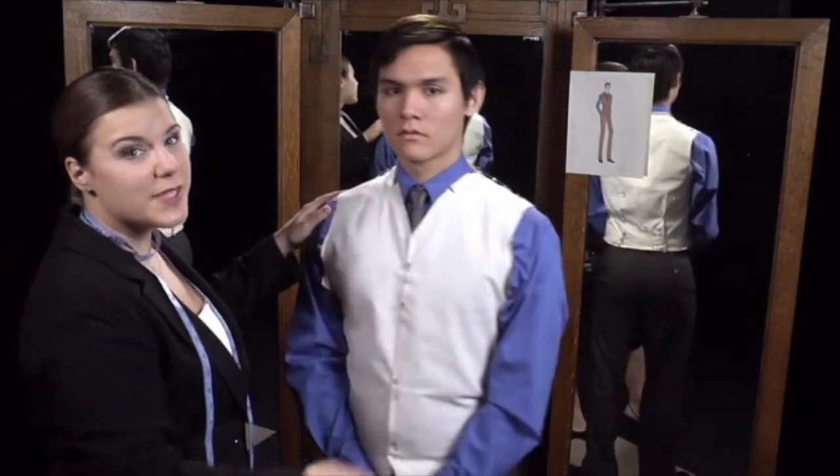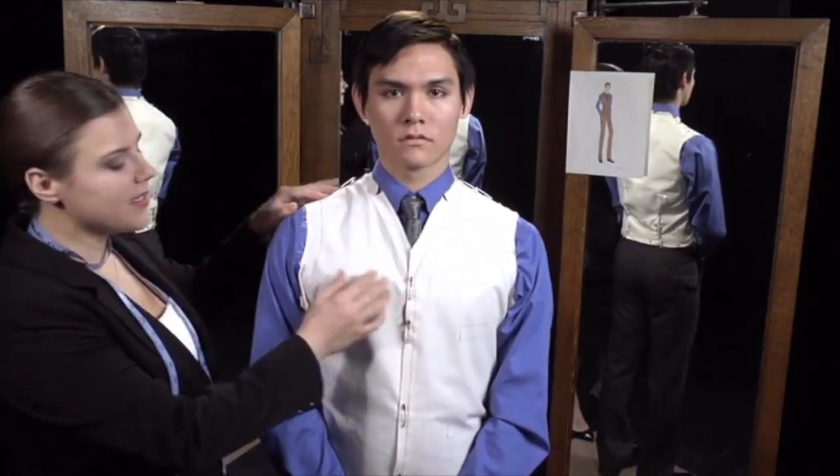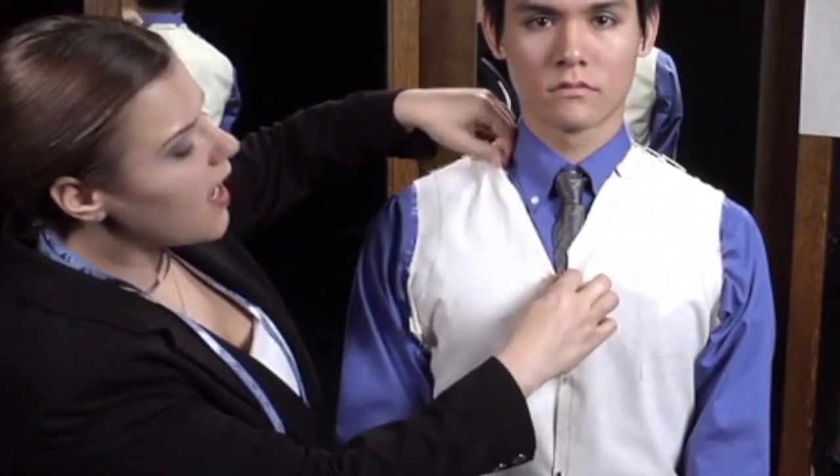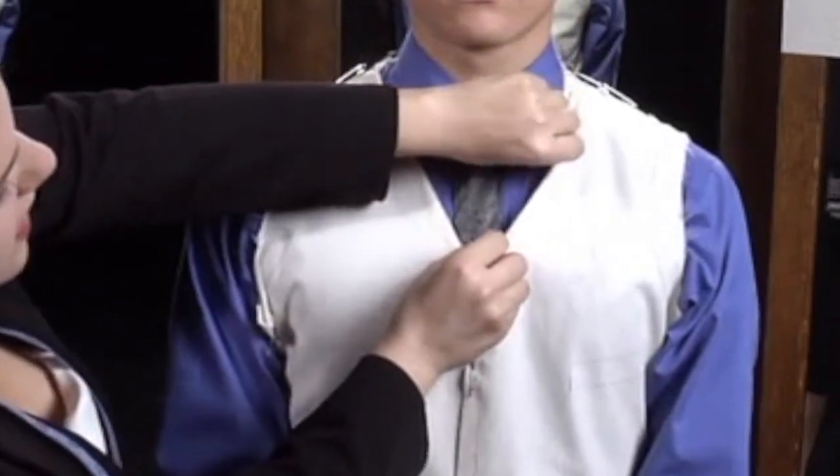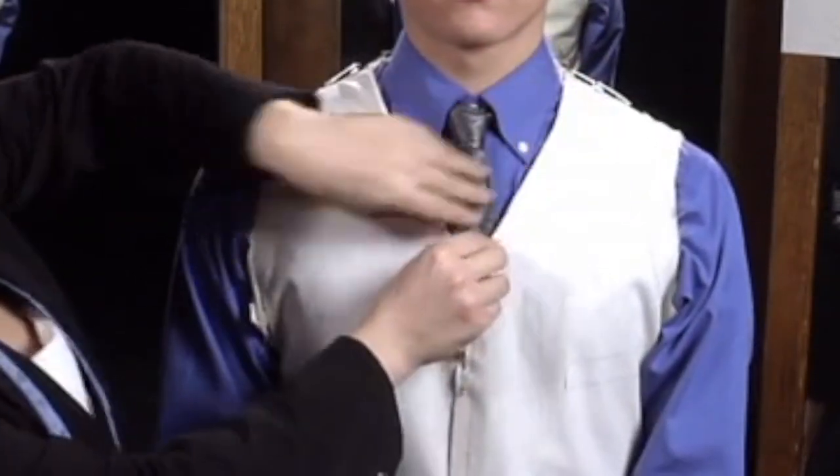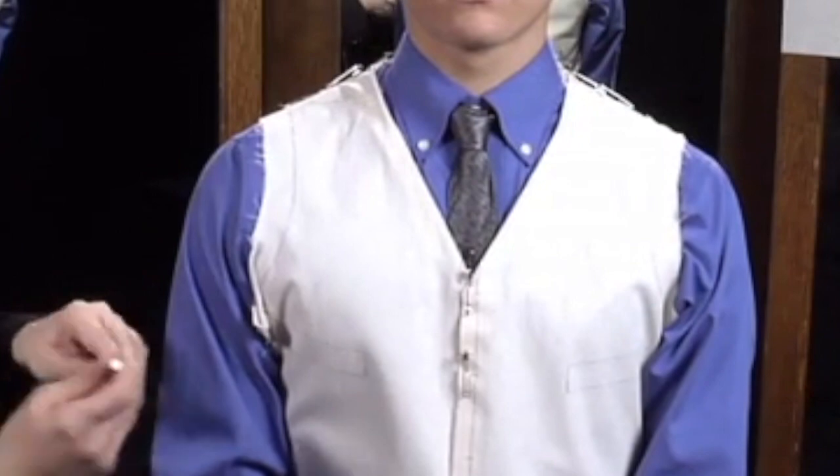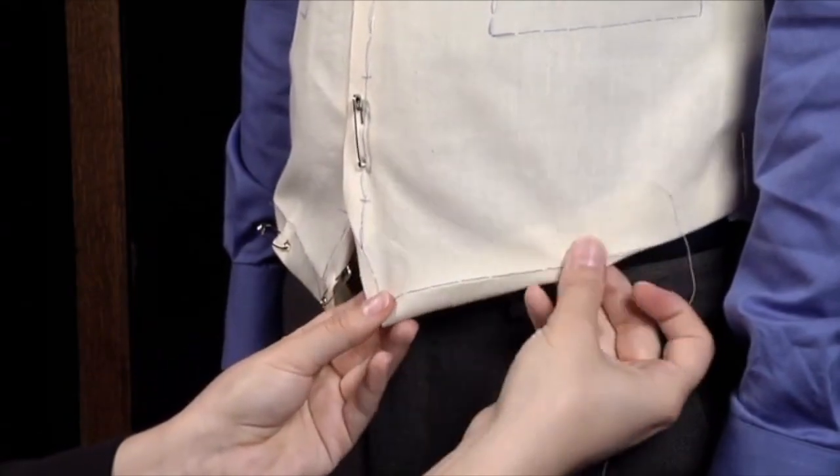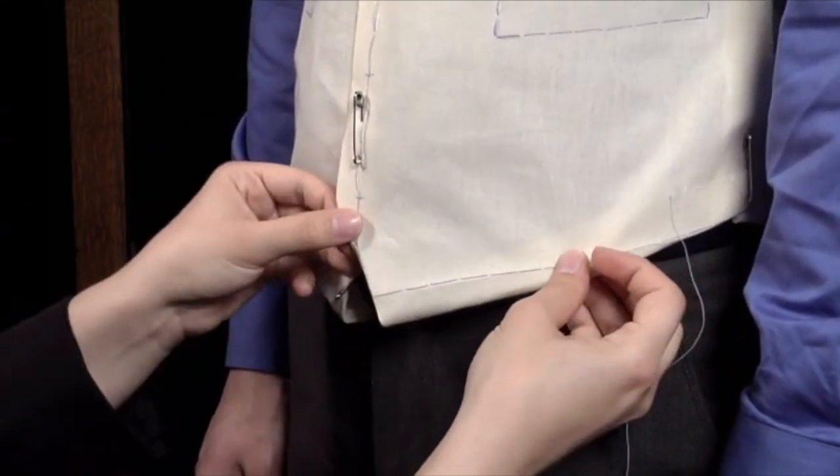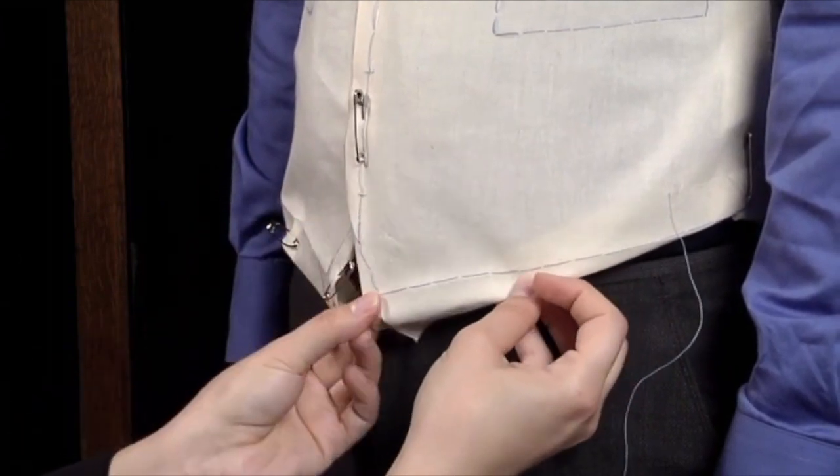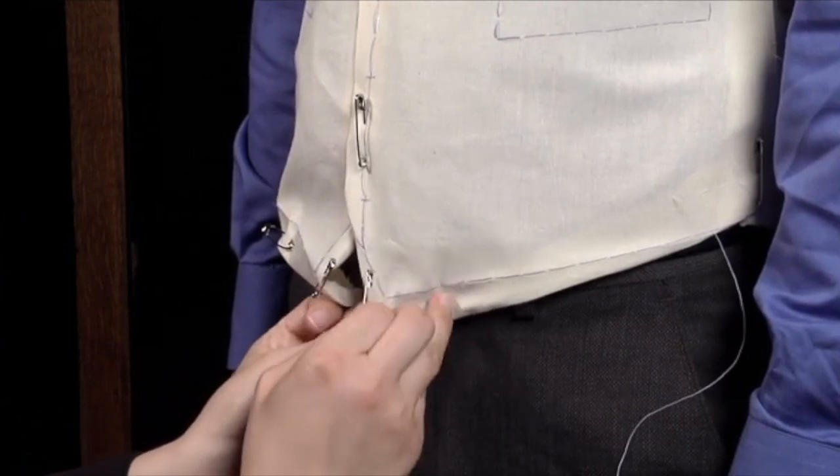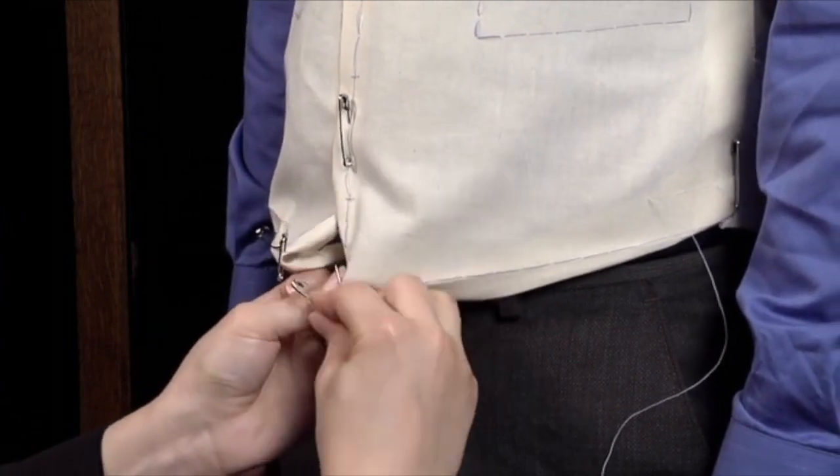Now that the vest fits properly, we can reevaluate the style lines. Personally, I think this neck edge is a little bit modest. I like to see more tie. So I'll adjust that and then mark it with my water-soluble marker. I also think that these points at the hem are set too close together and are not quite the right shape. I'll adjust those as well. This area of the vest is one of the most important style lines and is usually long enough to cover the belt buckle.